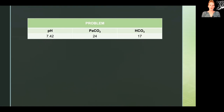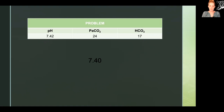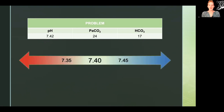One indicator of compensation is that the pH is normal even if partial pressure of carbon dioxide or bicarbonate is not normal. Here our pH is 7.42 — the normal is 7.35 to 7.45, so it's in normal range, which tells us we're in compensation. Even though we have a range of normal, the exact midpoint is 7.40. Anything less than 7.40 is still trending toward acidosis, and anything more than 7.40 is still trending toward alkalosis. So our 7.42 tips us toward the alkalosis side.